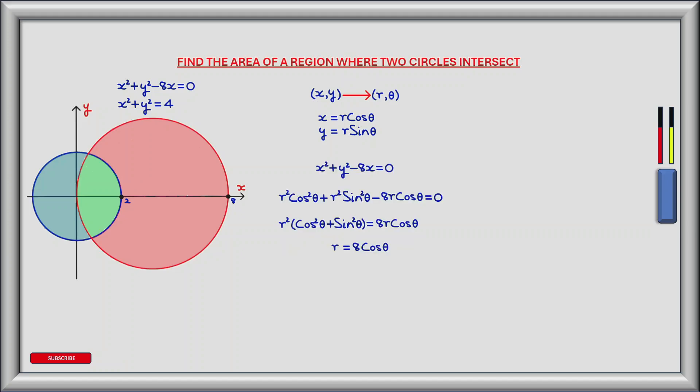For the red circle, substituting for x and y we get r squared cos squared theta plus r squared sine squared theta minus 8r cos theta equals zero. Using the trig identity cos squared theta plus sine squared theta equals one, and dividing both sides by r, gives r equals 8 cos theta.